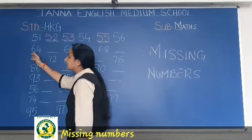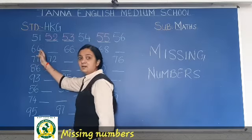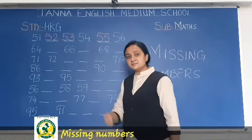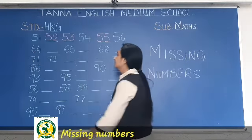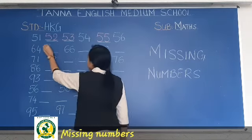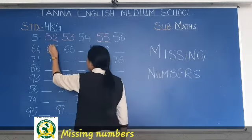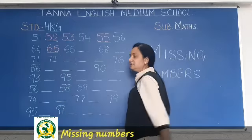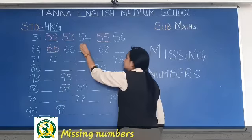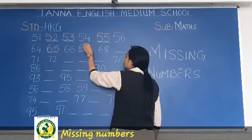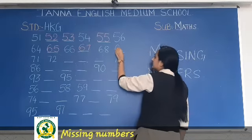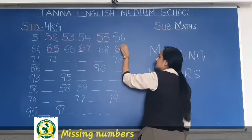Here you can see 64. What comes after 64? Write 65. 66 is written, so write here 67. Then 68 is written, so write here 69.